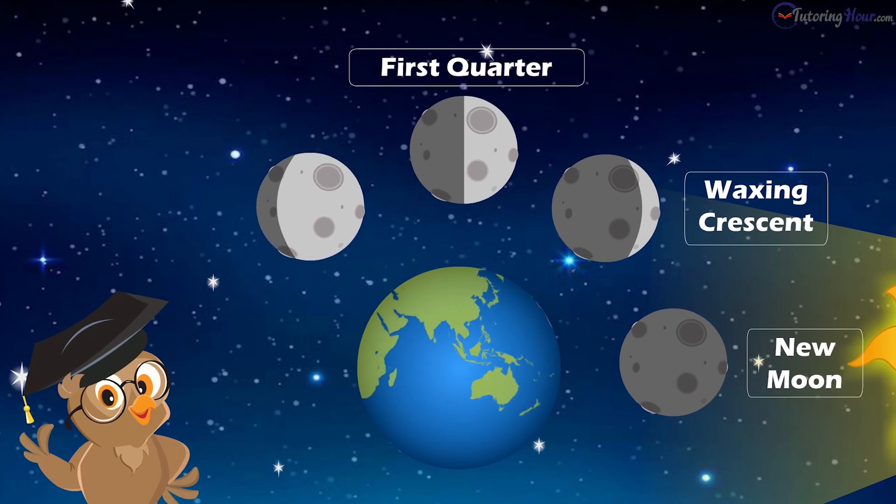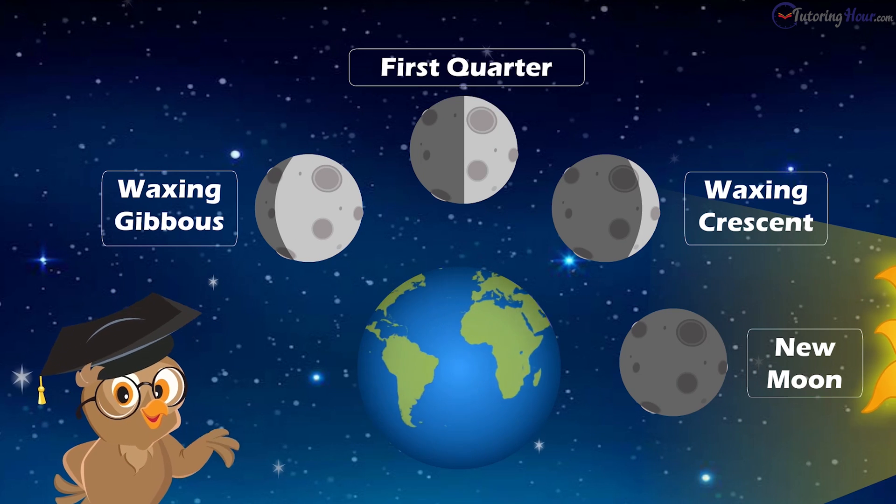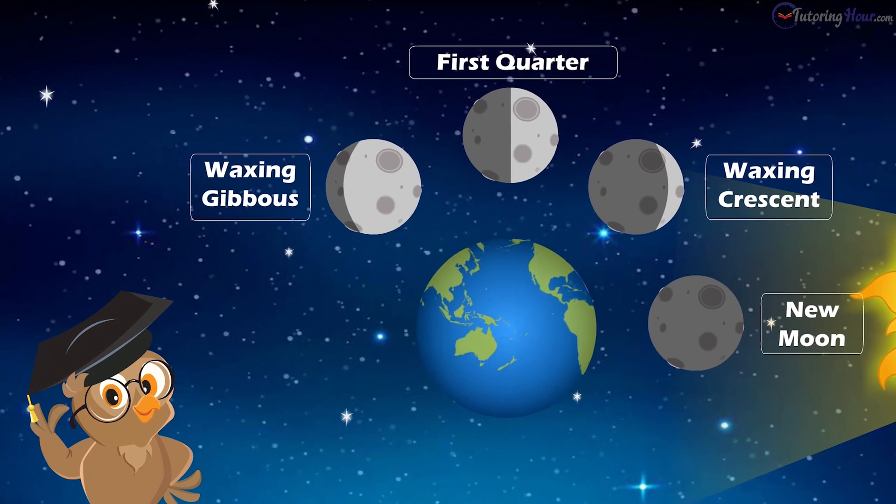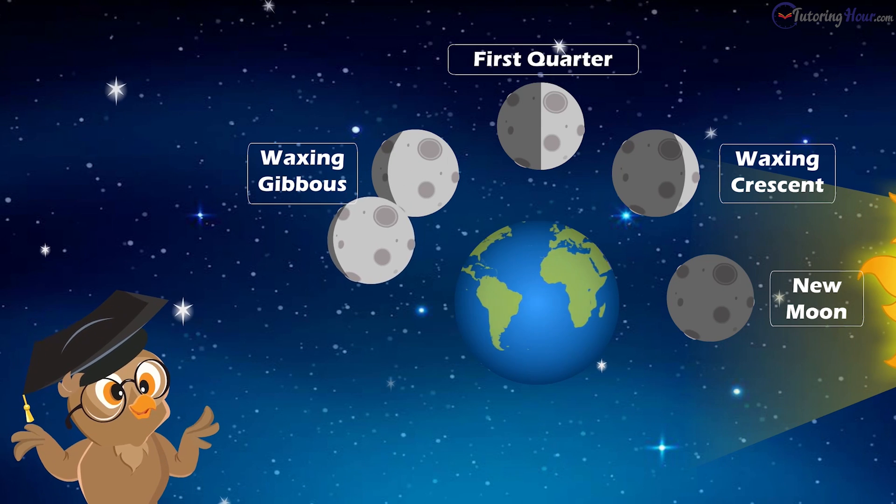This is followed by the fourth phase, the waxing gibbous. The waxing gibbous is the phase between the half moon and the full moon.